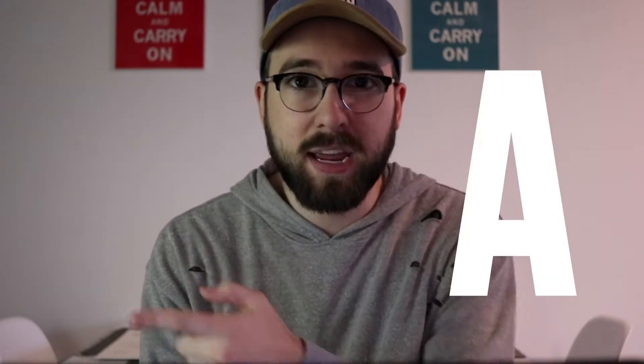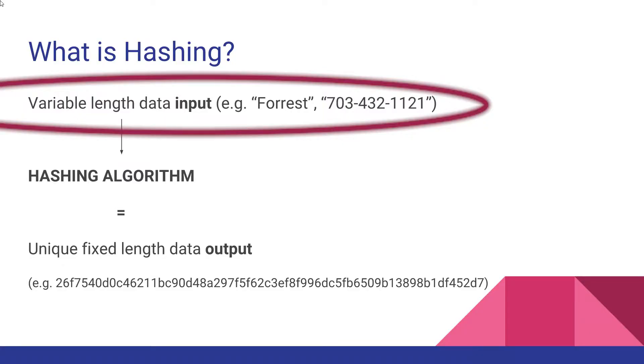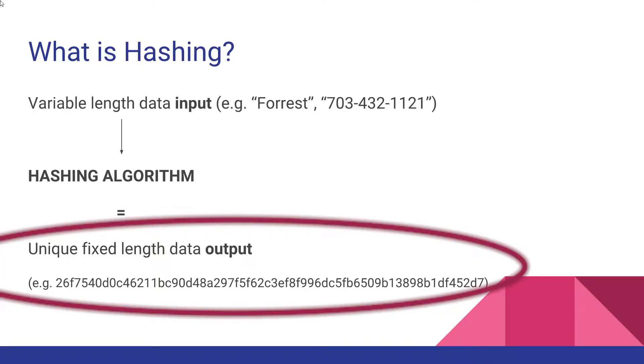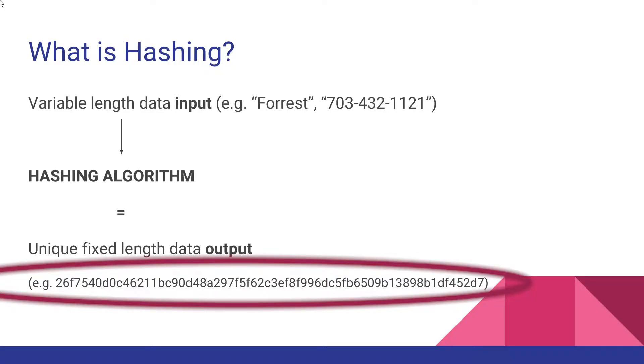So guys, what the heck are secure hashing algorithms? I'm sure you've heard of algorithms like SHA-256 when talking about blockchain — you've read it in white papers, seen it on TechCrunch or Medium.com. Secure hashing algorithms are really just a function on the computer that allows a variable length input — a number or a word — and produces an output that is a fixed length. Let's take my name for example: Forrest. It's seven letters long.